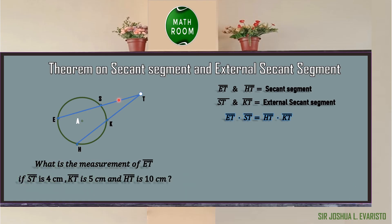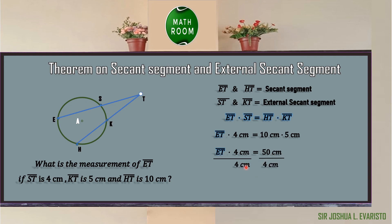For example, find segment ET if segment ST is 4 cm, segment KT is 5 cm, and segment HT is 10 cm. By substitution: ET × 4 = 10 × 5 = 50. Dividing both sides by 4: ET = 50 ÷ 4 = 12.5 cm. Therefore, segment ET is equal to 12.5 cm.